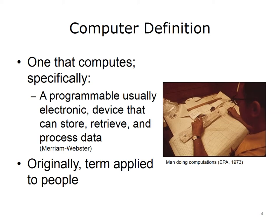According to Webster's Dictionary, a computer is one that computes, specifically a programmable, usually electronic device, that can store, retrieve, and process data. Originally, this term applied to people, since they were the ones who performed the first computations.